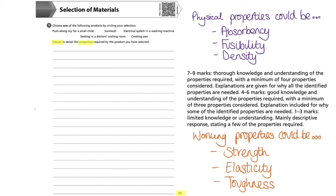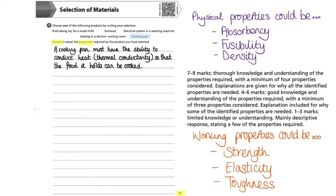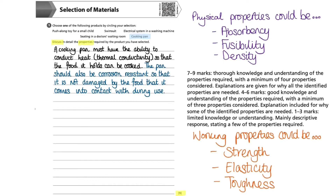Let's begin thinking about our cooking pan. The purpose of a cooking pan is to allow ingredients or food to be placed inside so that it can conduct heat and the food can be cooked. So the first property is thermal conductivity. To ensure the pan can be retained for subsequent use, it must also be corrosion resistant so it is not damaged by the food it contacts. The pan also requires toughness to resist impact if hit or dropped, and malleability so it can be formed into the correct shape during manufacturing.